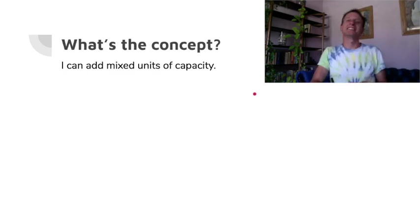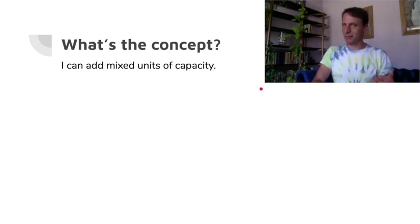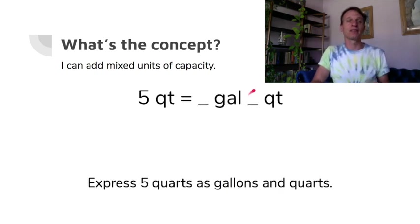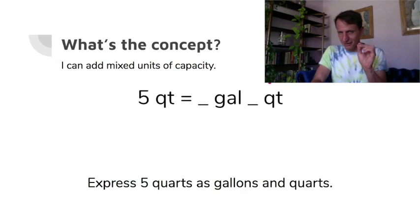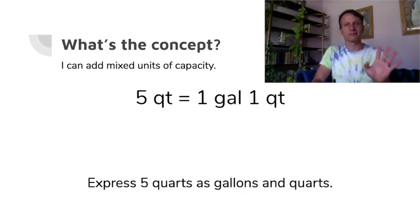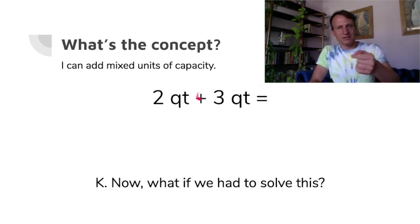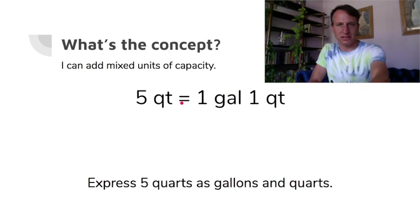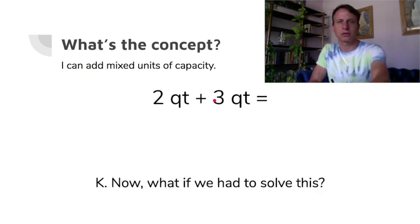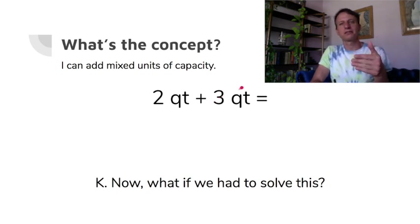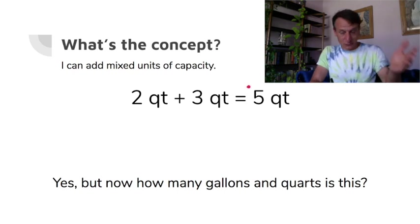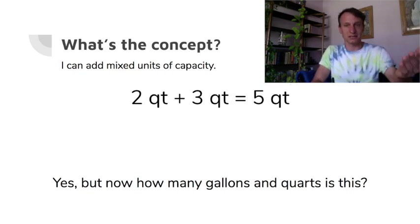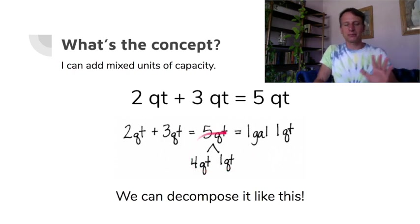Now we're getting to the lesson. It'll start off easier and then ramp up. Five quarts is how many gallons and quarts? Four of those quarts give me one gallon with one left over. Now here's something similar but with addition: two quarts plus three quarts is five quarts — the same thing we just did. How many gallons and quarts is that? Pull out the four quarts — that's one gallon — leaving one more quart.